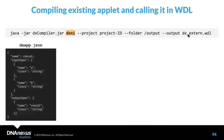For example, if we have an applet called CONCAT with two string inputs A and B and a string output called result, that applet has a dxapp.json specification. If you're unfamiliar with dxapp.json, I encourage you to check the community site for apps and workflows webinar materials covering how to generate and customize it.